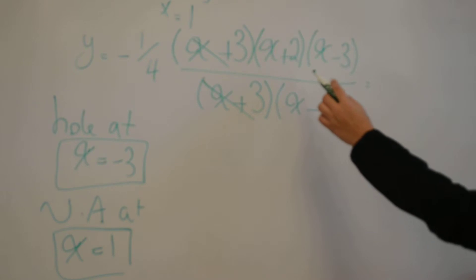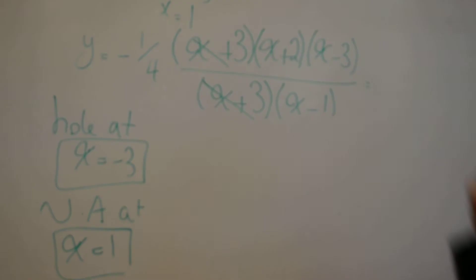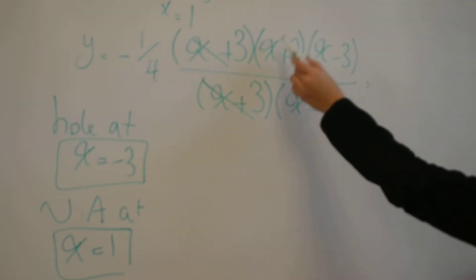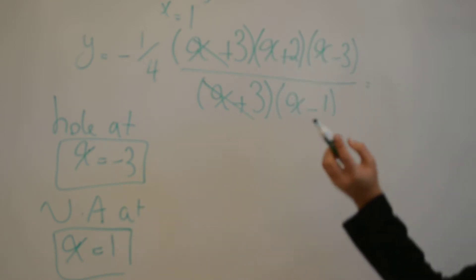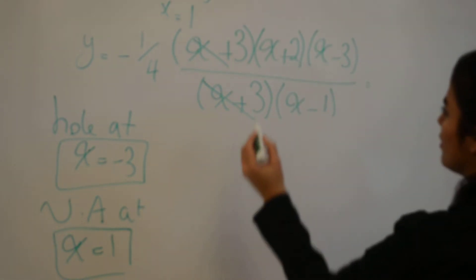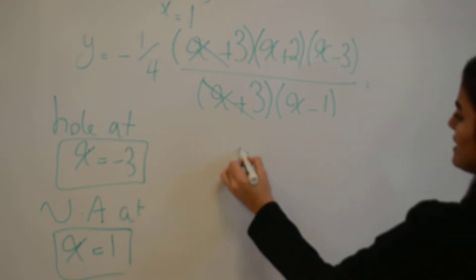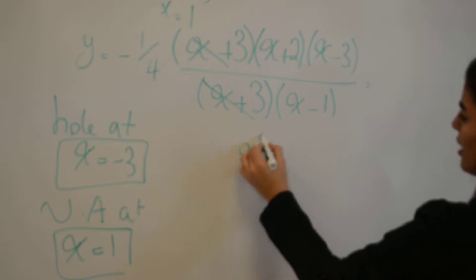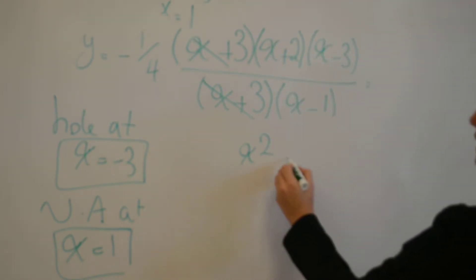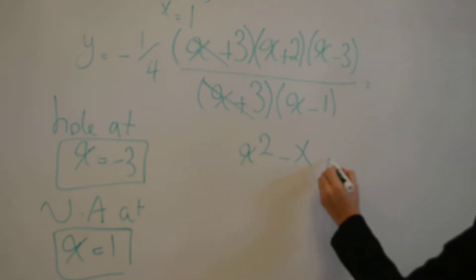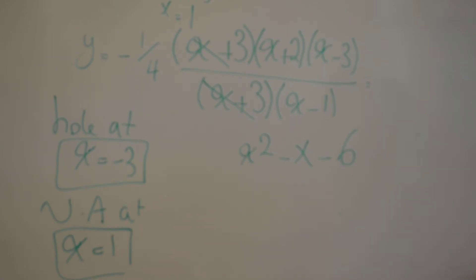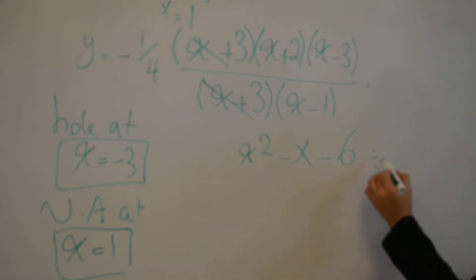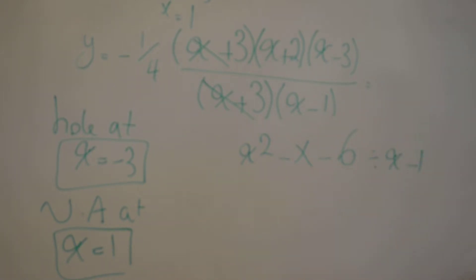To find our slant asymptote, we need to FOIL and expand the numerator, then divide it by x minus 1. FOILing that gives us x squared minus x minus 6. Now we divide by x minus 1 to get our slant asymptote.